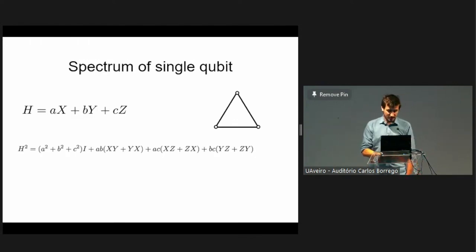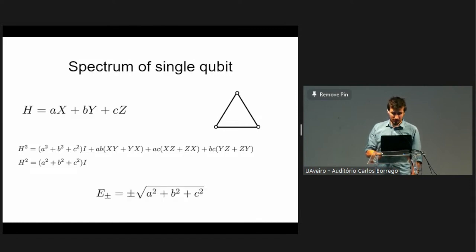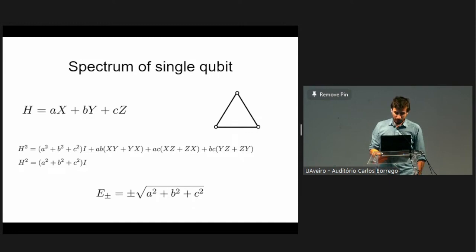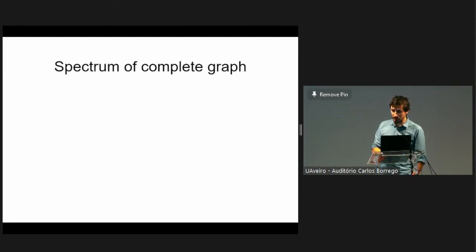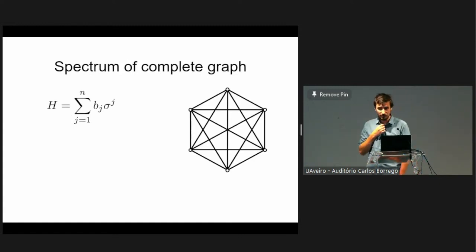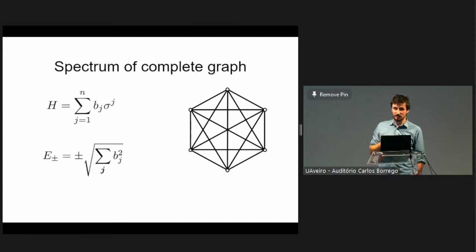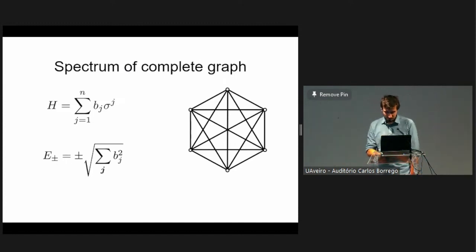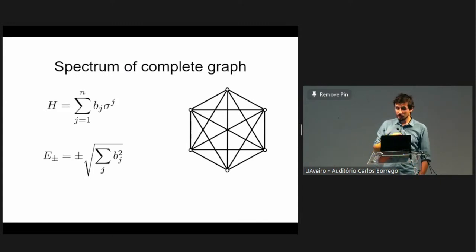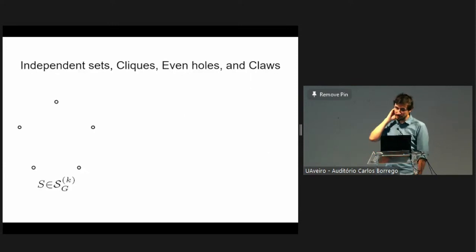The frustration graph structure can completely determine the spectrum of the Hamiltonian. You already know an example: the single-qubit Hamiltonian, where all three terms anti-commute, giving a complete graph on three vertices — a triangle. When you square the Hamiltonian, all cross terms cancel, and you can read off energy eigenvalues as ±√(a² + b² + c²). The same works for a complete graph on six vertices — the story doesn't change, it just gets a little more complicated.